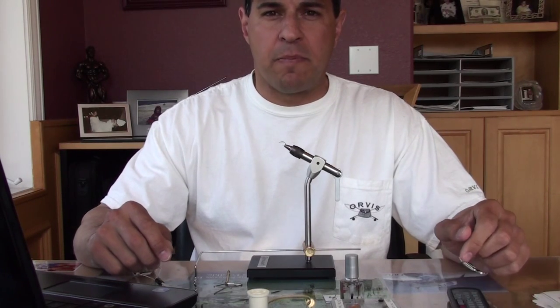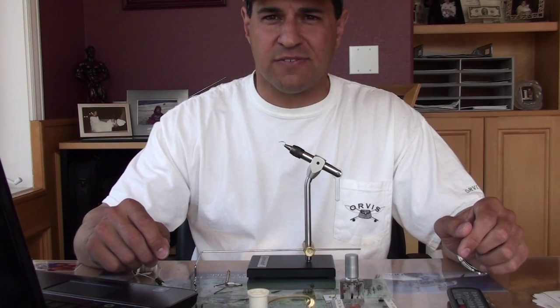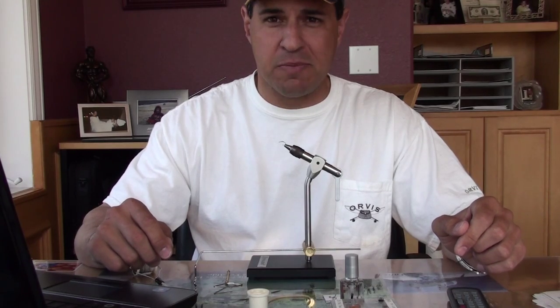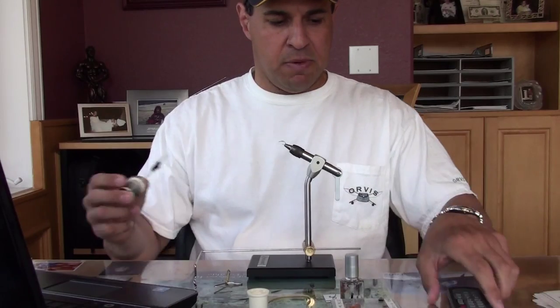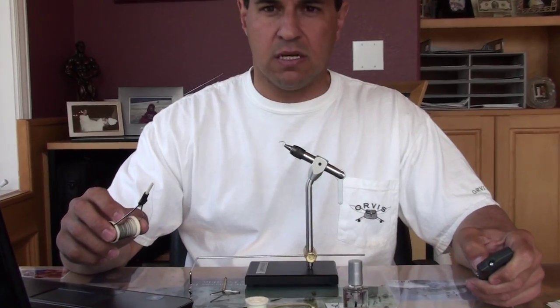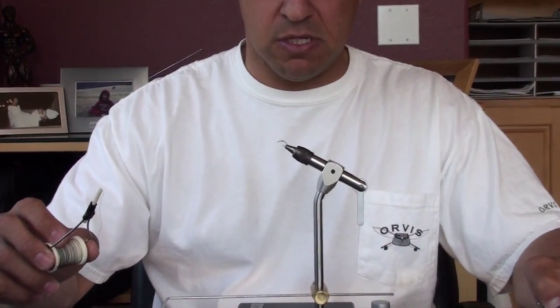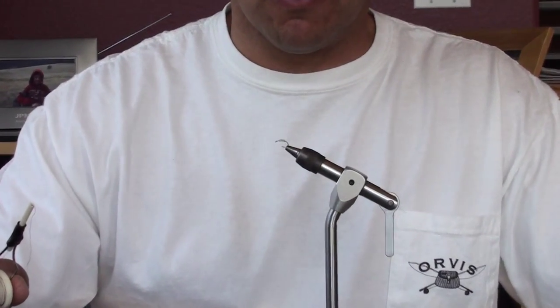Okay, today I'm going to be tying the rubber band Caddis. The best part about this fly is it uses three materials and is very inexpensive, very easy. I begin with a number 14 emerger hook. TMC 2457 would work out great.